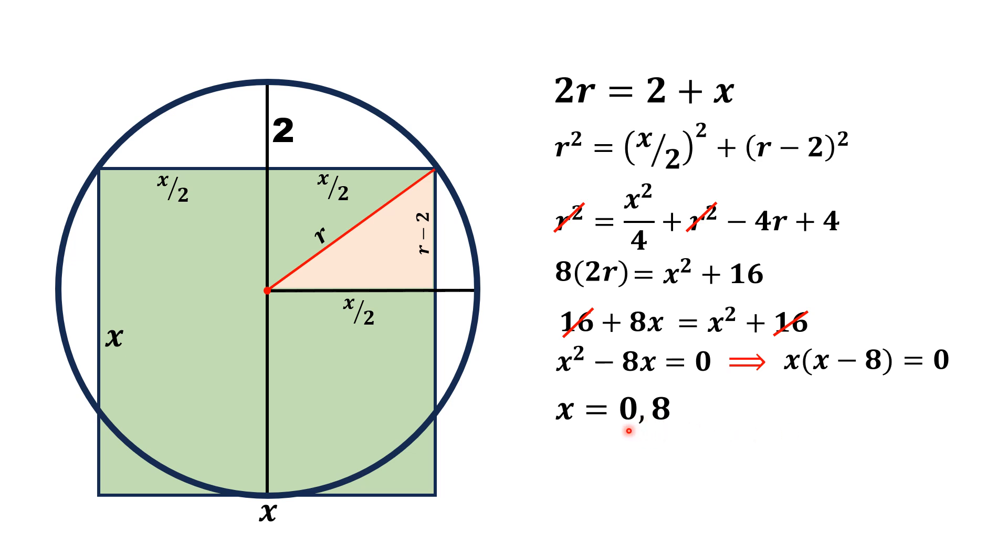So 0 is not a valid solution. We will cancel it out and x will be 8 units. Now we have found the side of the square, as we have to find the area of this square.